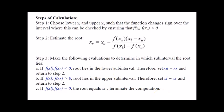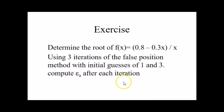For this false position method, I'm not going to show any example because it is just very similar to bisection. But what I want you to do is try on your own these exercises. I have two exercises here. Please try this on your own. Determine the root of this function using three iterations of the false position method, given initial guesses of xl equals 1 and xu equals 3. And also you are asked to compute ea after each iteration.